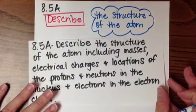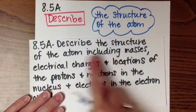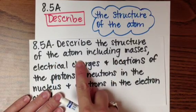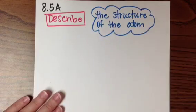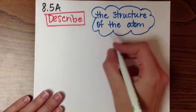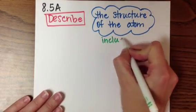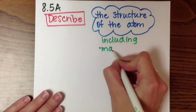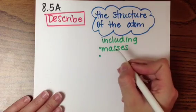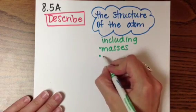So looking back at my tech, students need to describe the structure of the atom. These things down here are what they need to be able to describe, so we're going to put those in a different color. I'm going to use green for my including statement. Here I'm going to put all of those little pieces into a bulleted list.